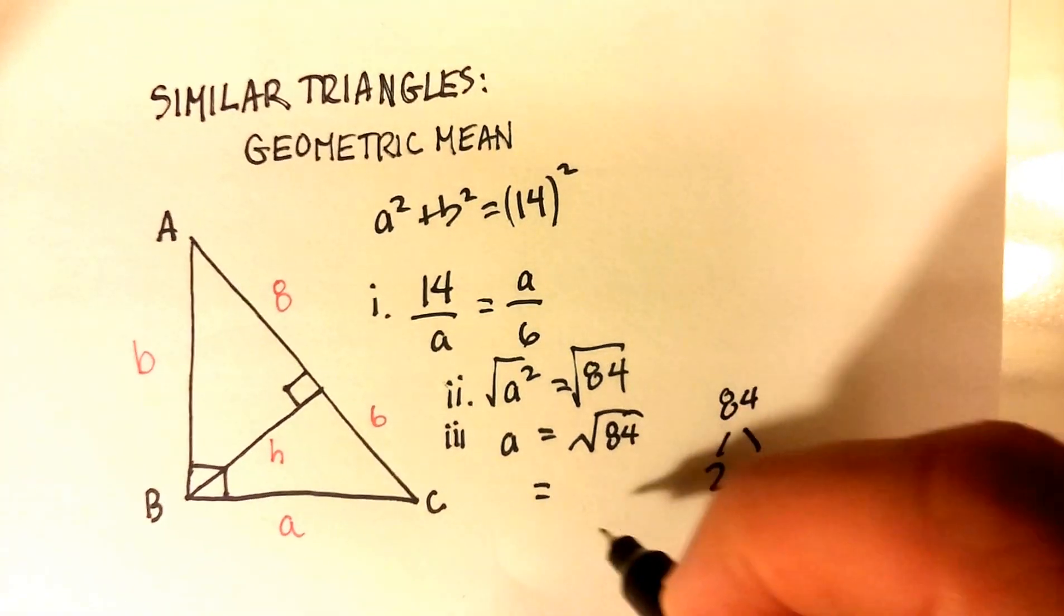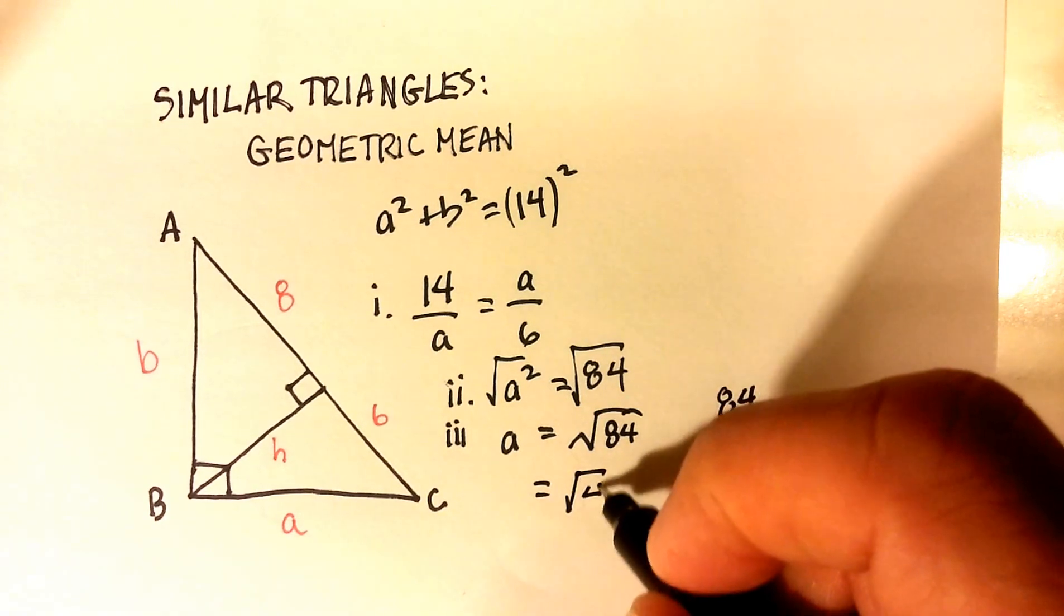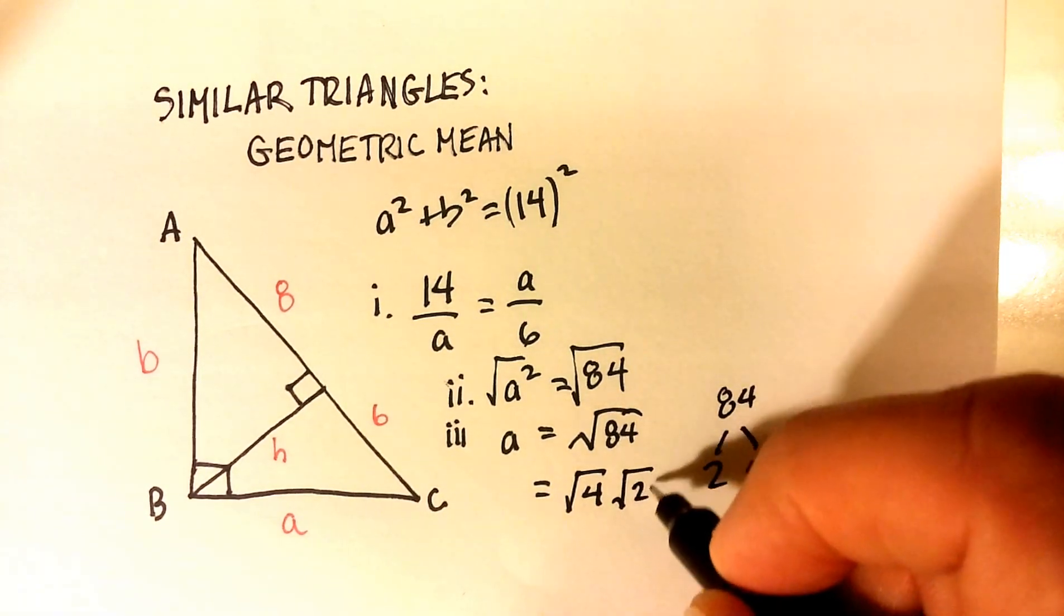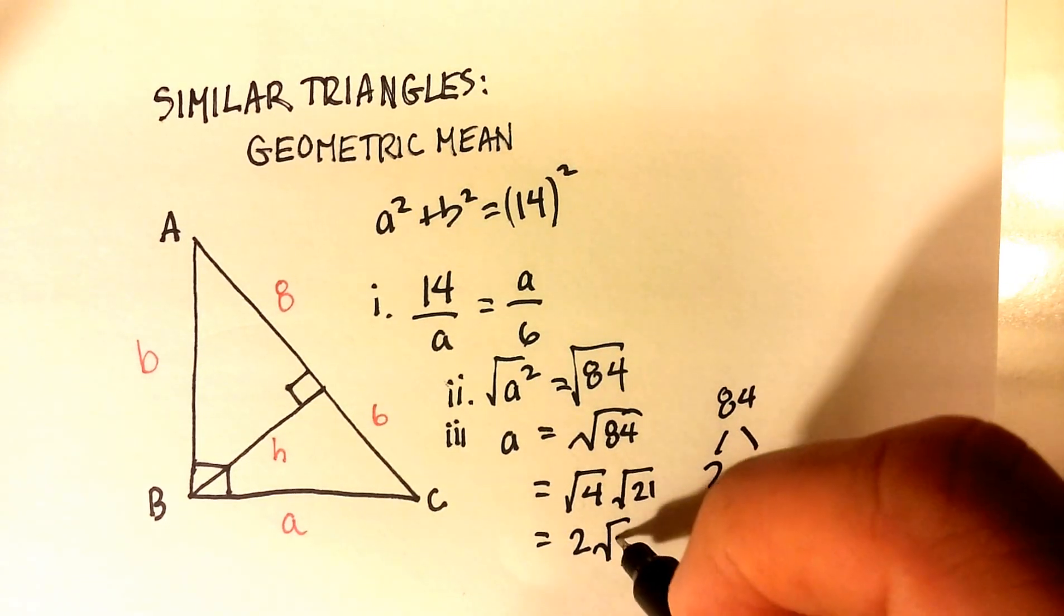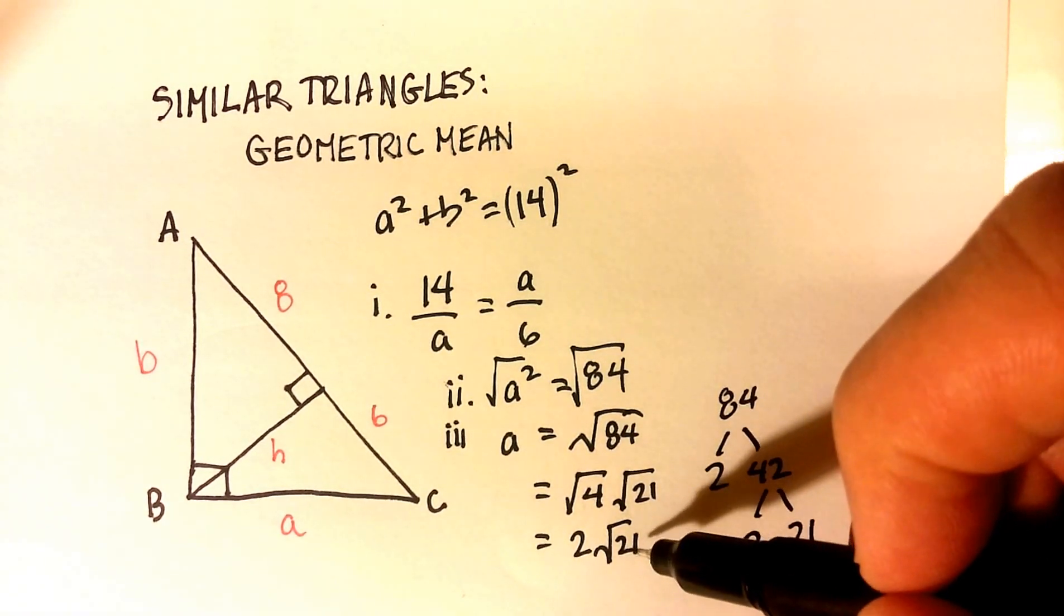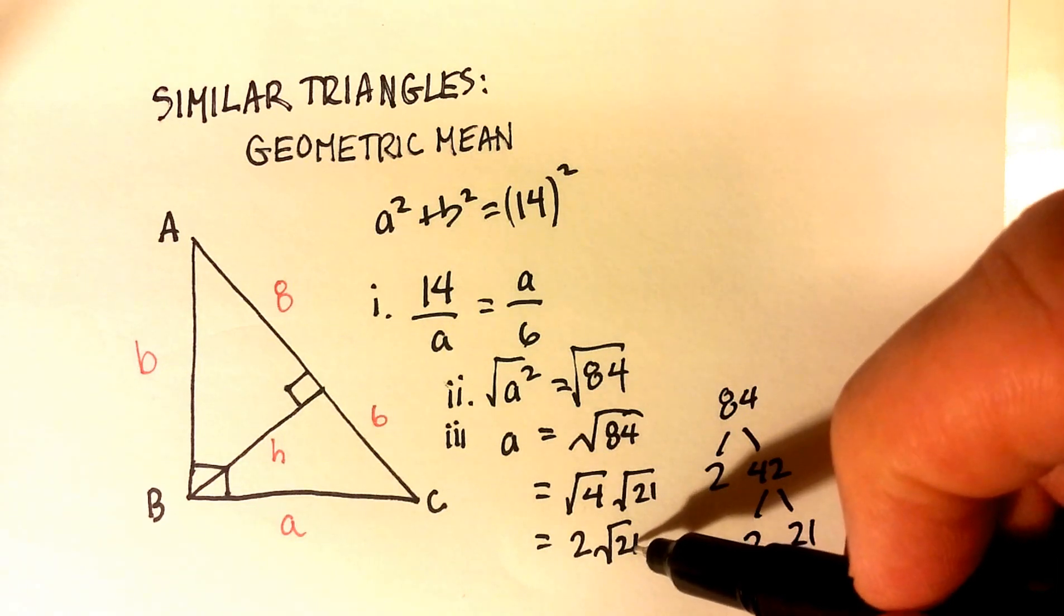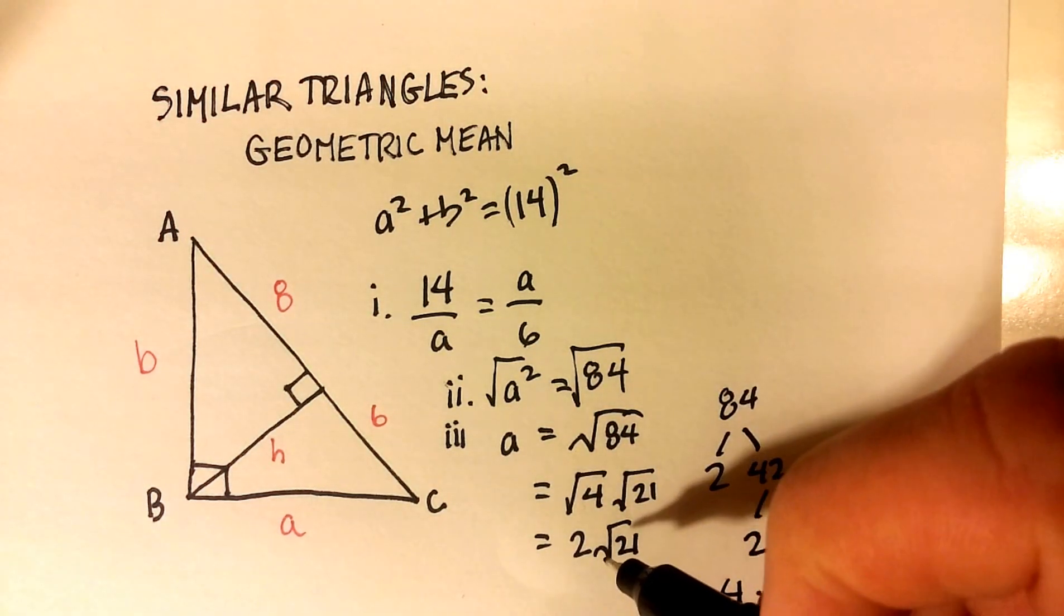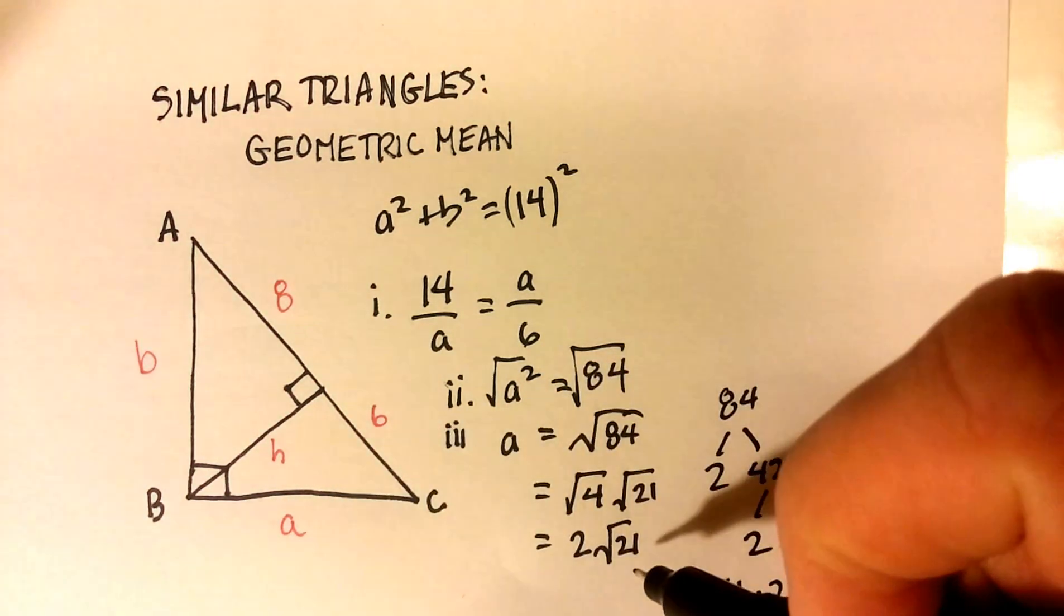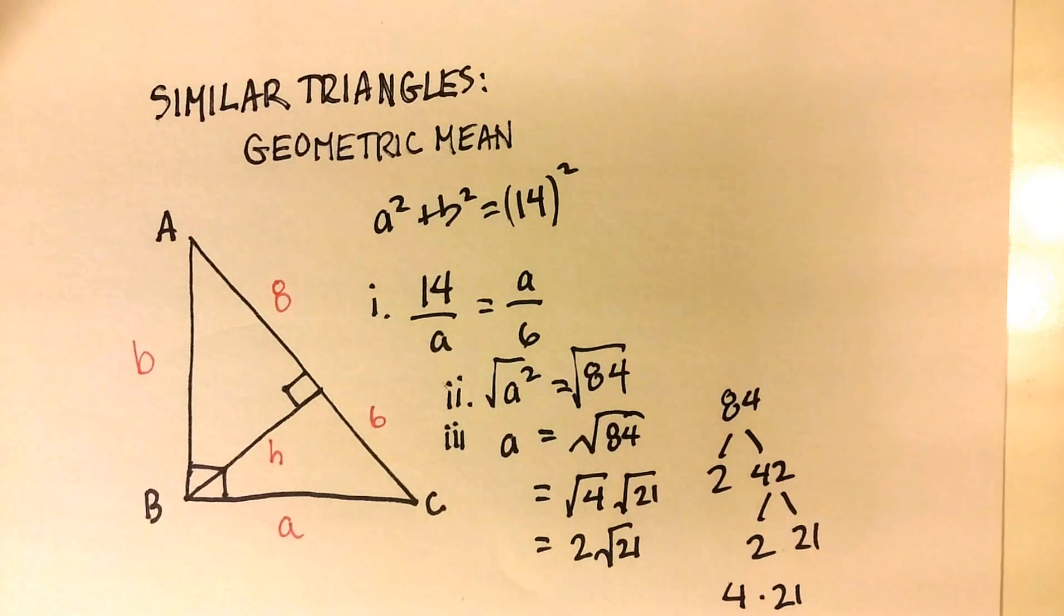So we can rewrite this as radical 4 times radical 21 or 2 radical 21. Now, I know that 21 is a number that doesn't have any more perfect squares in it. So we know that this length now, A, is equal to 2 radical 21.